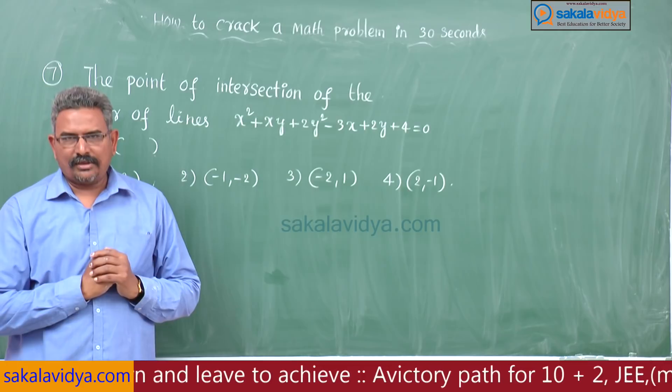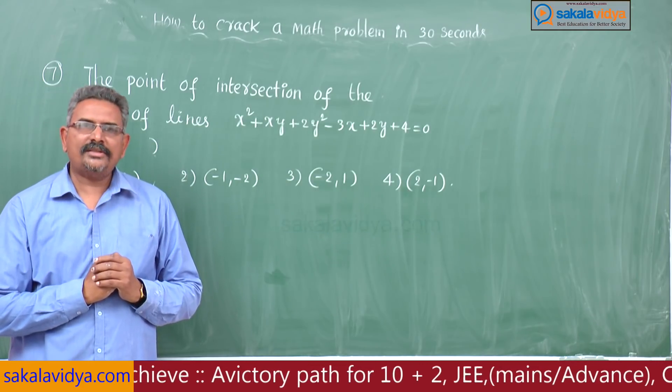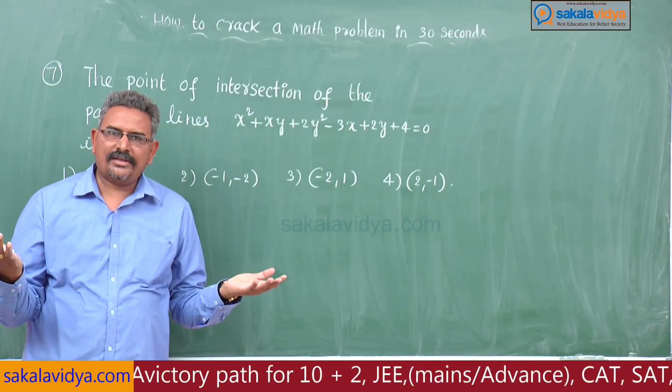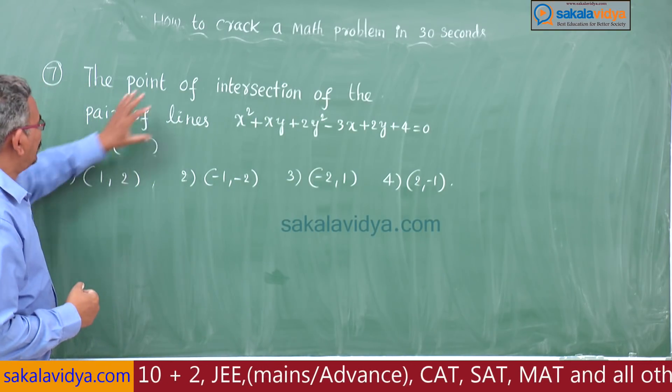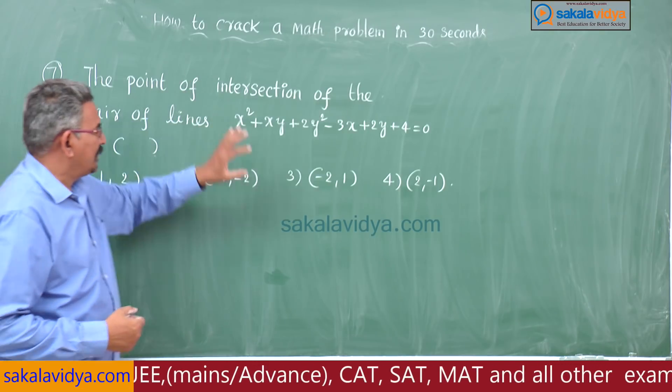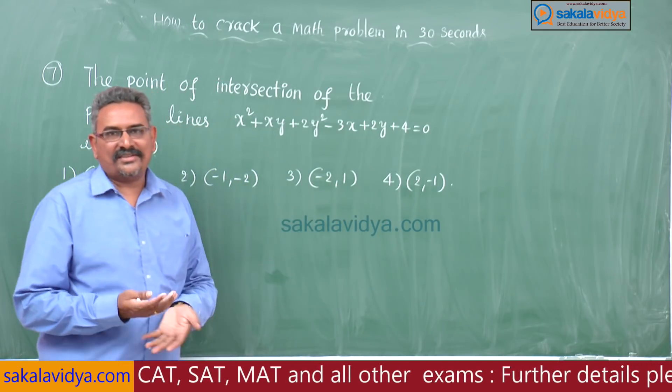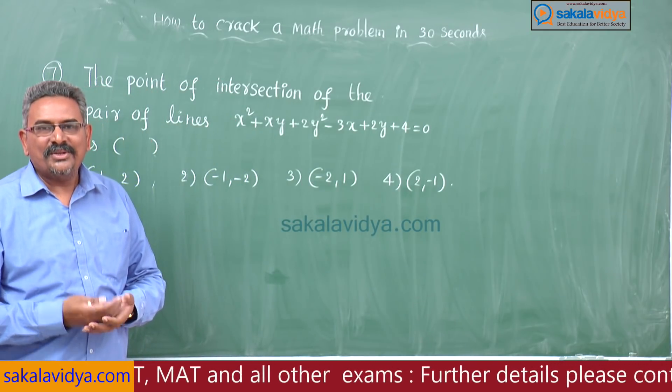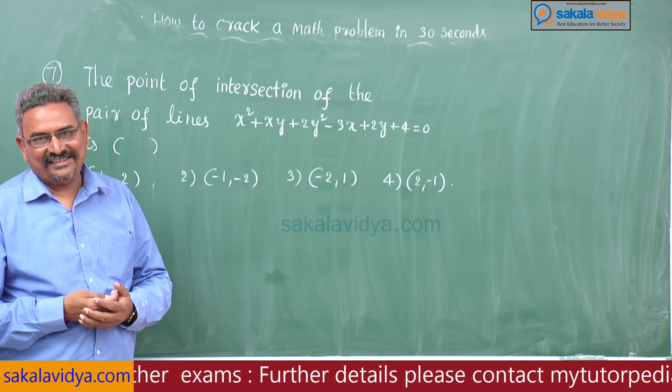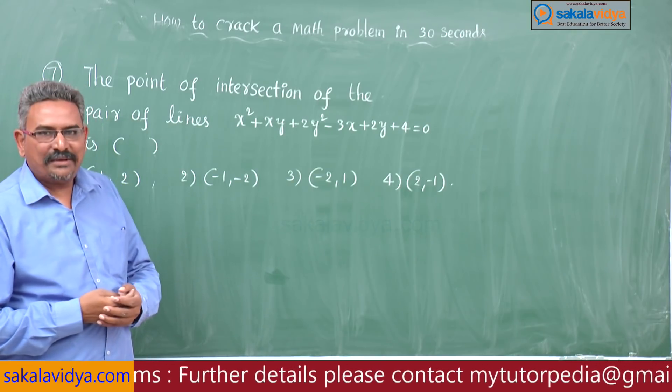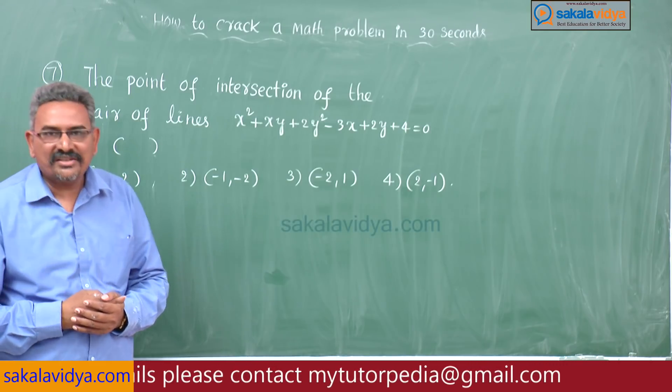Formula method: HF minus BG by AB minus H square comma GH minus AF by AB minus H square. Second one is substituting first option, second option, third option, fourth option - whichever satisfies is the answer. But sometimes two or more points will satisfy, then problem will arise. I will explain the method using partial differentiation.